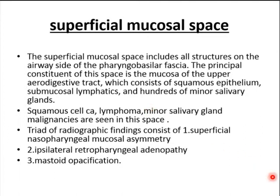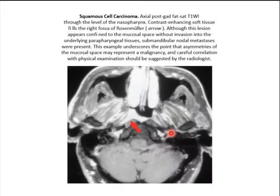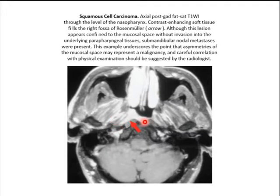The superficial mucosal space includes all structures of the airway side of the pharyngobasilar fascia. Its principal constituent is mucosa consisting of squamous epithelium, submucosal lymphatics, and hundreds of minor salivary glands. Squamous cell carcinoma, lymphoma, and minor salivary gland neoplasms are seen in this space, typically showing a triad of radiographic findings: superficial oropharyngeal mucosal asymmetry, ipsilateral retropharyngeal adenopathy, and mastoid air cell opacification. This case of squamous cell carcinoma shows obvious mucosal asymmetry with lymphadenopathy, and mastoid air cell opacification due to the lesion obstructing the Eustachian tube at the fossa of Rosenmüller.